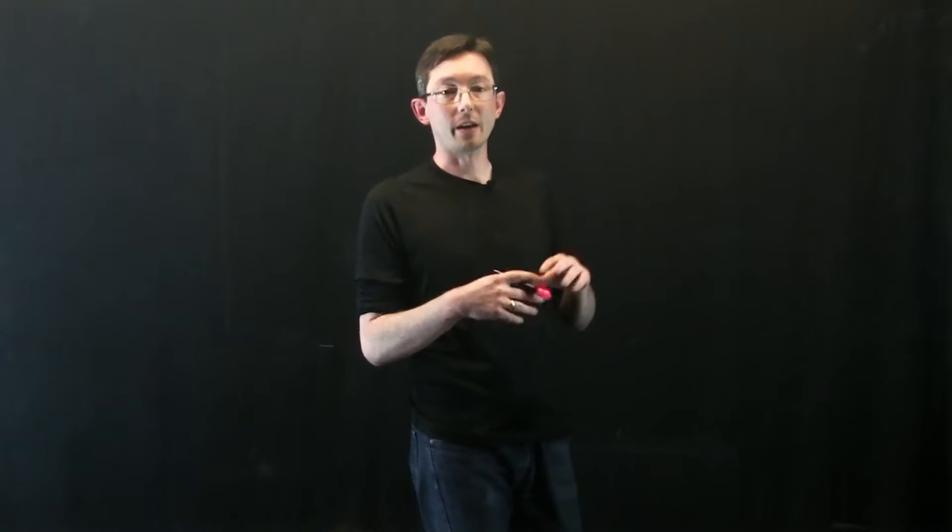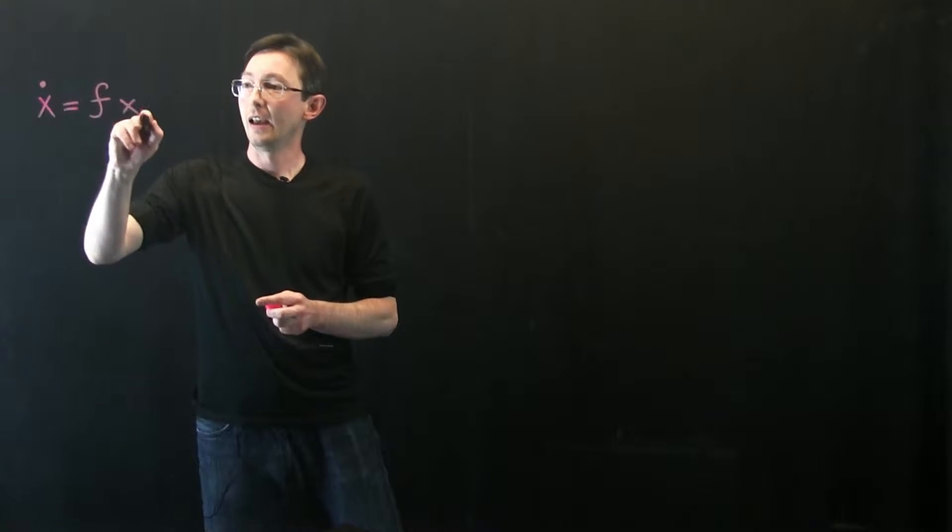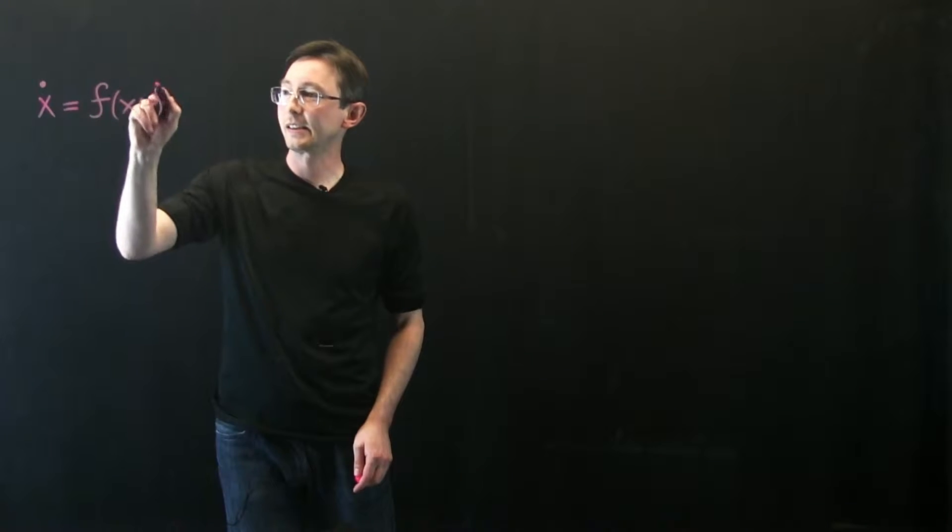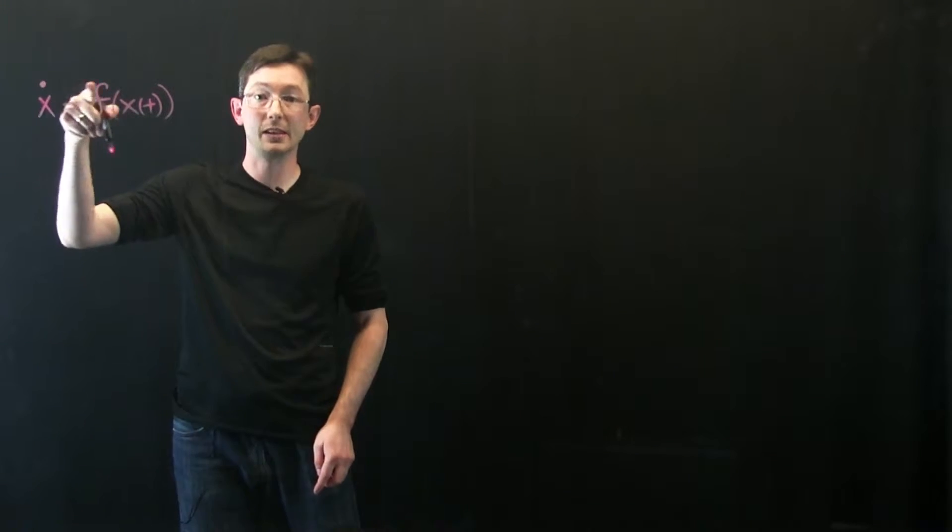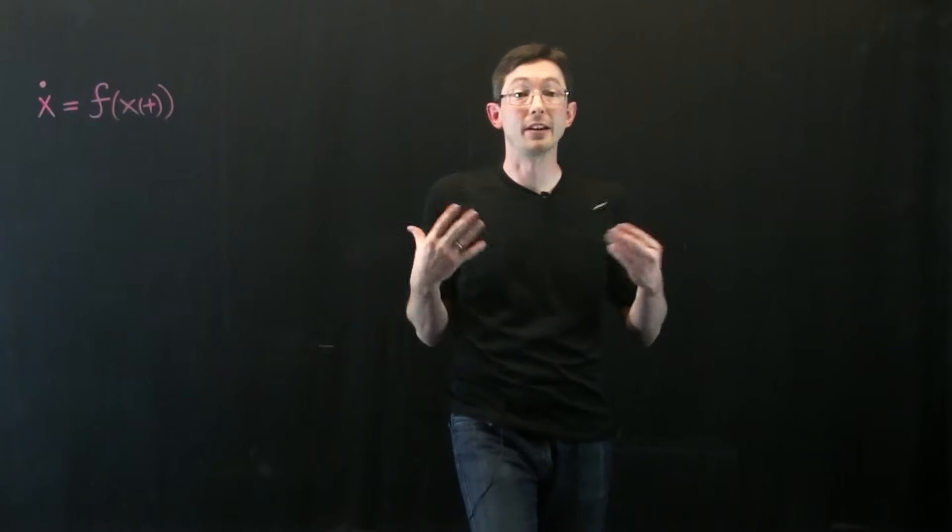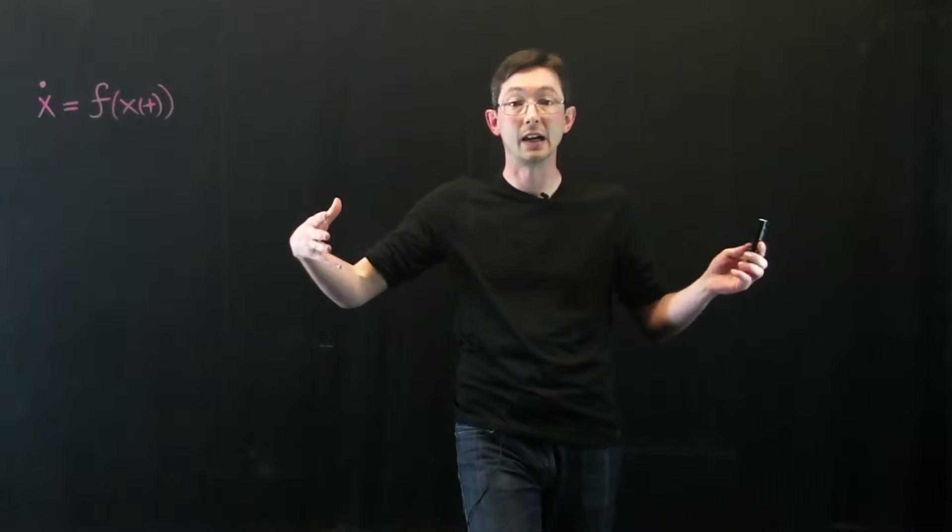Welcome back. We're talking about dynamical systems, and in the last lecture we talked about continuous time dynamical systems x dot equals f of x. I want to be explicit that this state x depends on t, so the time derivative of x equals some function of x. This is just how we write down differential equations where some state vector x evolves in time.